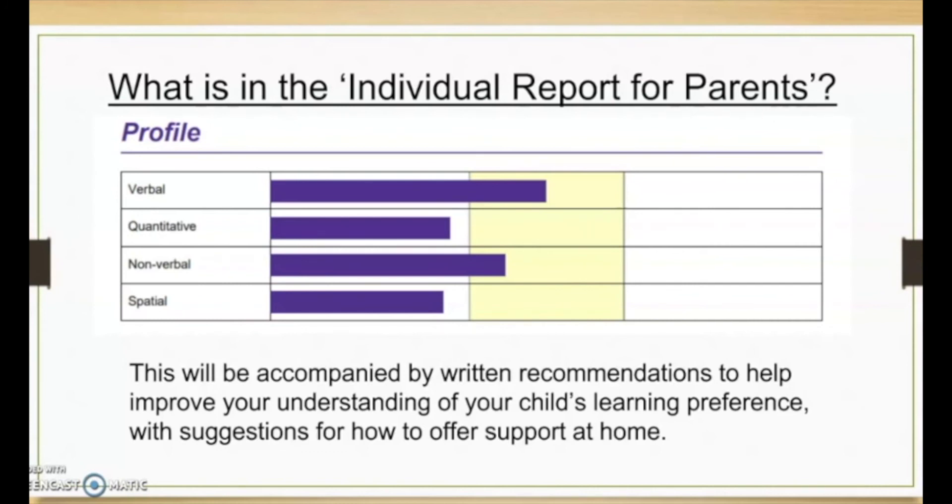I just want to talk a little about a few things here. We see the profile word and then we see the four batteries listed: verbal, quantitative, non-verbal and spatial. What we have in the yellow is what we call average.